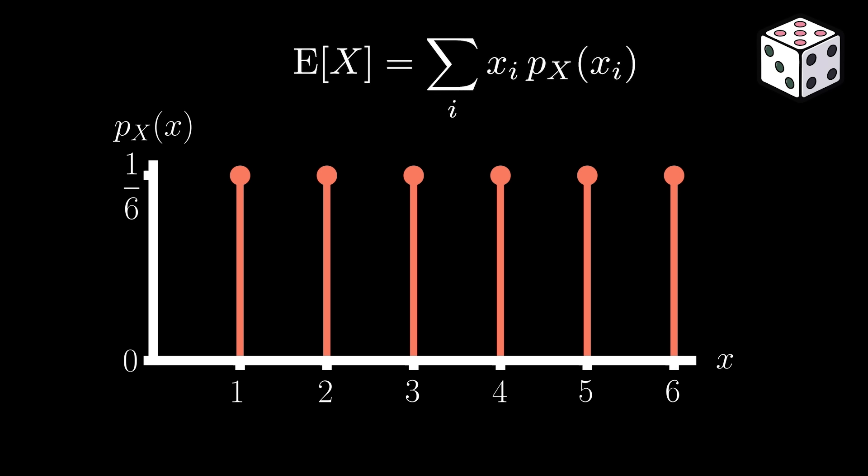Here we are computing an average based on each possible outcome, x sub i, that the die can take on, weighted according to each outcome's probability of occurrence. Plugging in our values into our formula, we arrive at 3.5, reflecting the central tendency of our random variable. As long as you can remember this definition of the mean or expected value for any random variable, you should be all set for the remainder of this video.